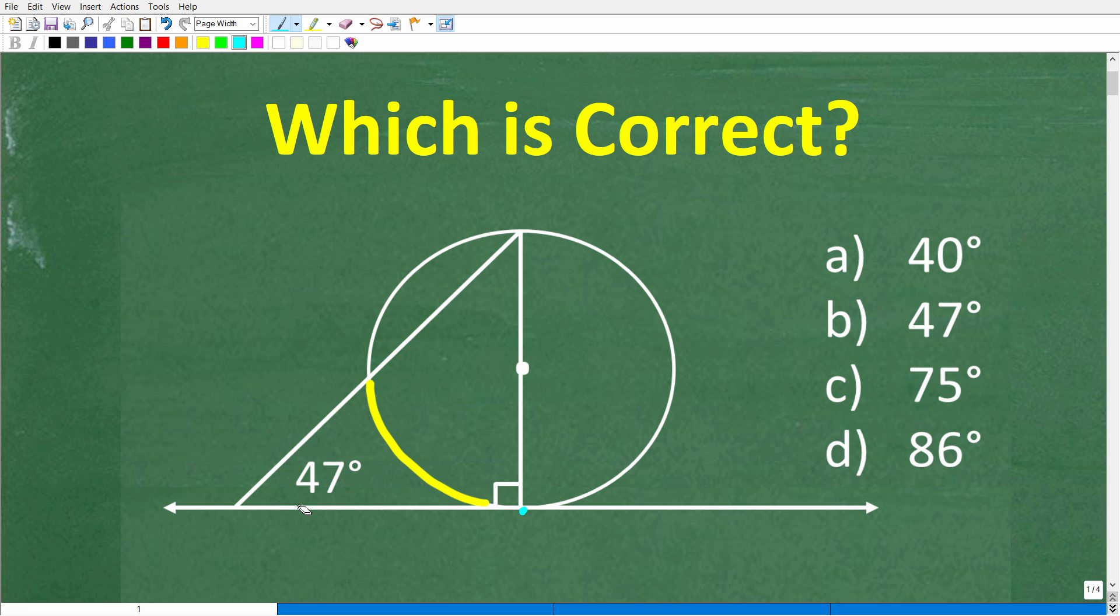All right, so this is the information in the prompt. But what is the question? Well, the question is, what is the measure of this arc right here in the circle, this arc highlighted with yellow? Now, an arc is just a segment, okay, a piece of the circle. All right, and we're going to measure that in degrees. So what is the measure of this arc right here? That is the question.